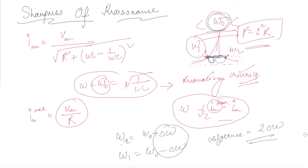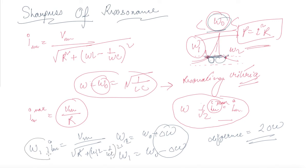To find omega_1, I write I at omega_1 as Vm divided by the square root of R squared plus (omega_1·L minus 1/(omega_1·C)) squared. Similarly for omega_2. Since we have assumed the power becomes half at these frequencies, the current is 1 by root 2 times I_max.